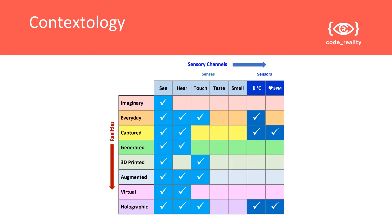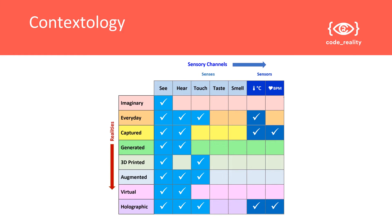Wherever there's a tick, there's a requirement for some kind of interface, so to complete this experience we would need to ensure there were interfaces wherever a particular sense or sensory data channel engages with a particular reality. As a consequence, we looked at each tick and decided what kind of interface we want. For example, seeing something in augmented reality — we included a passive video of Leonardo da Vinci's machines in action showing how they work, so somebody would simply be watching without interacting.